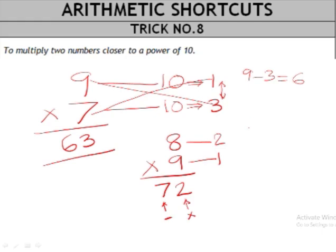Let's do a harder problem. Let's see. Now if we have 2 digits, a 2 digit number. For example, 92 times 97. Now the power of 10 in this case is 100. So this is 8 numbers away from 100. And this is 3 numbers away from 100.